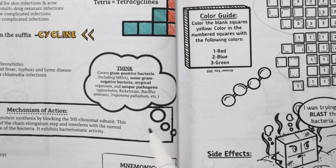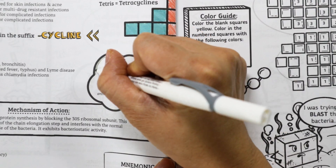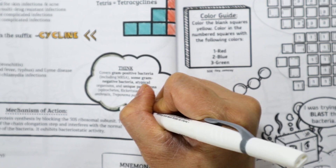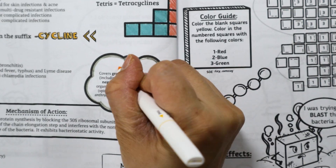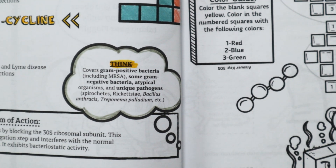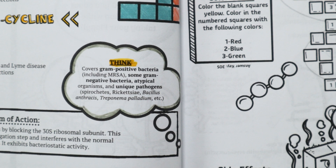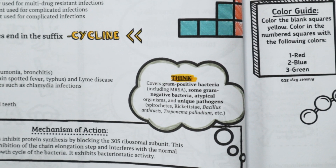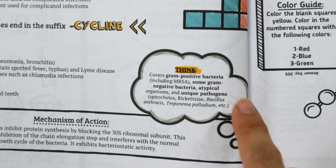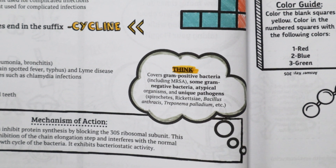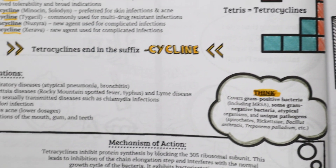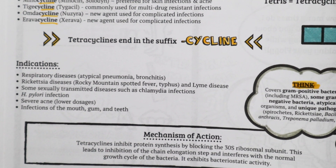Moving on. These antibiotics are considered broad-spectrum, meaning they can be used to treat a lot of different types of bacterial infections including gram-positive bacteria, including MRSA, some gram-negative bacteria, atypical organisms, and unique pathogens.